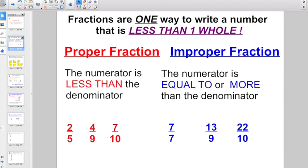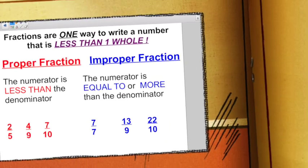But improper fractions are when the numerator is equal to or more than the denominator, like 7 sevenths or 13 ninths or 22 tenths. So we're going to be talking about what to do with your fractions when your numerator is equal or greater than your denominator.